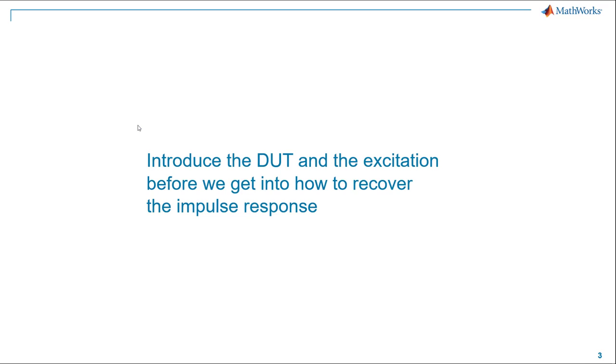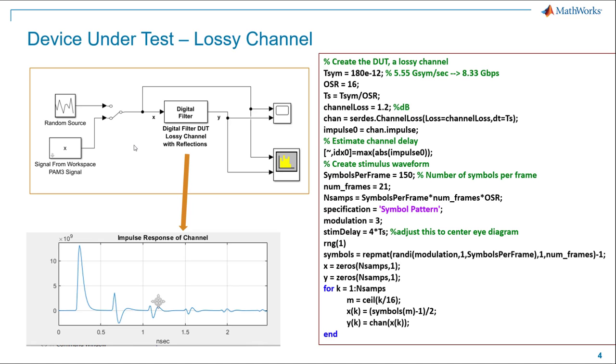Usually, I like to introduce the device under test and the excitation, at least in the time domain and in the frequency domain, before we get into the details of how the technique works. This is also a review from a previous video, so you can fast forward ahead if this is something you've already seen before. The device under test is a lossy channel with reflections, and you can see its impulse response in the lower left. I've also got some MATLAB code which generated it. I used the SerDes Toolbox Channel Loss System Object with a certain loss and a certain sample time that created the impulse response of this channel. Of course, you're free to use any impulse response you wanted to in your simulation.